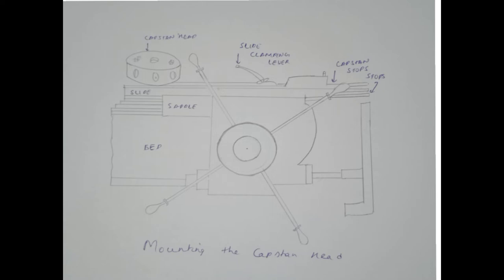A capstan-type handwheel is provided to move the saddle or slide and hence the turret. By turning the handwheel in reverse direction, the saddle or slide moves backward and in the meantime indexes the capstan head to bring the next tool in position.